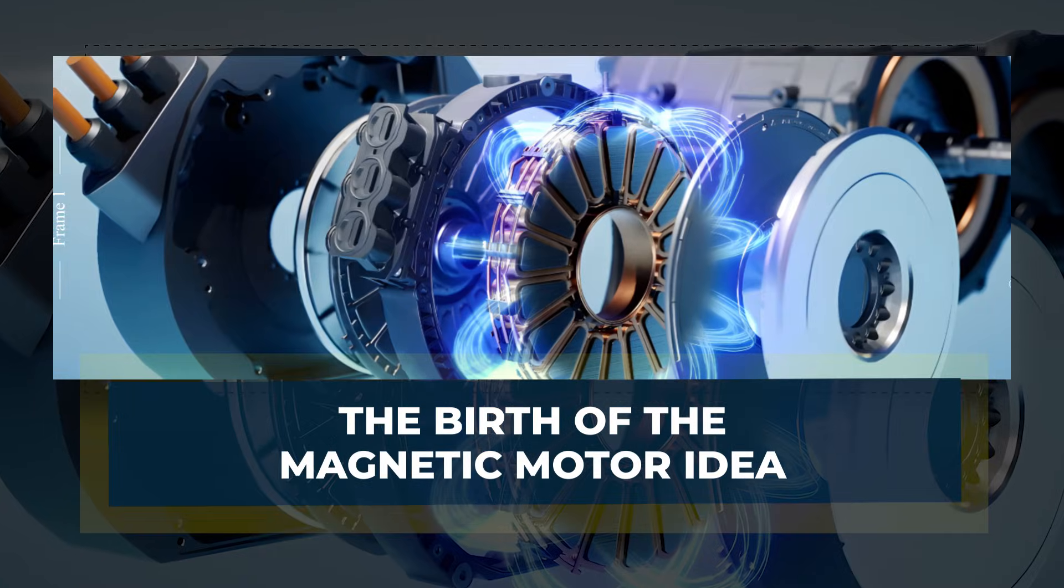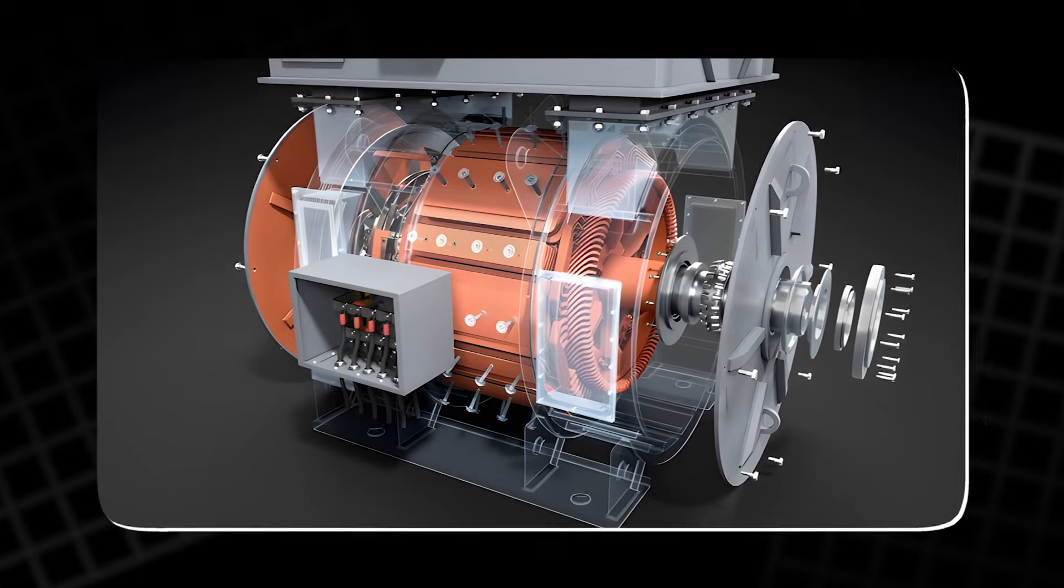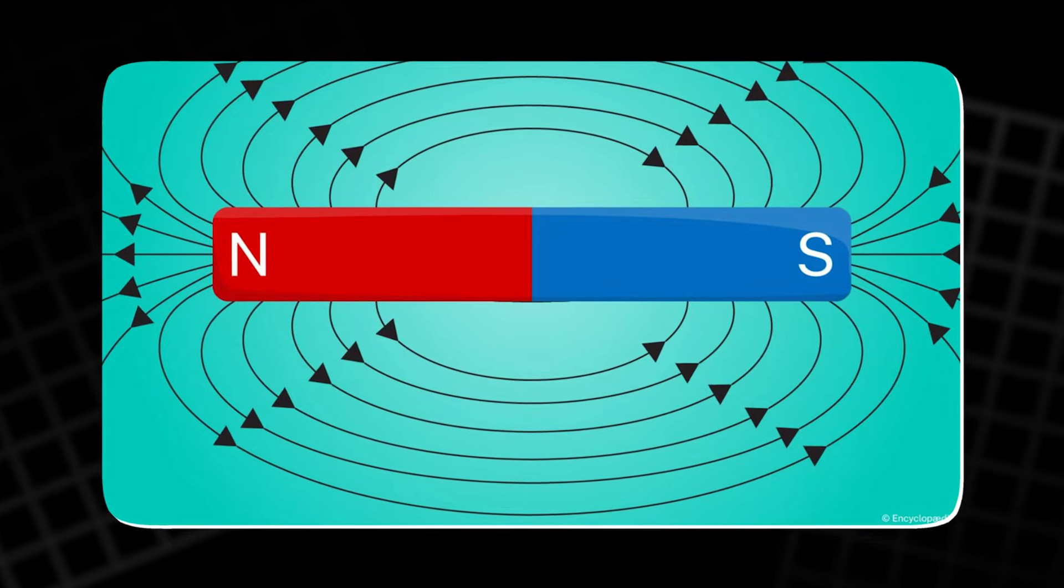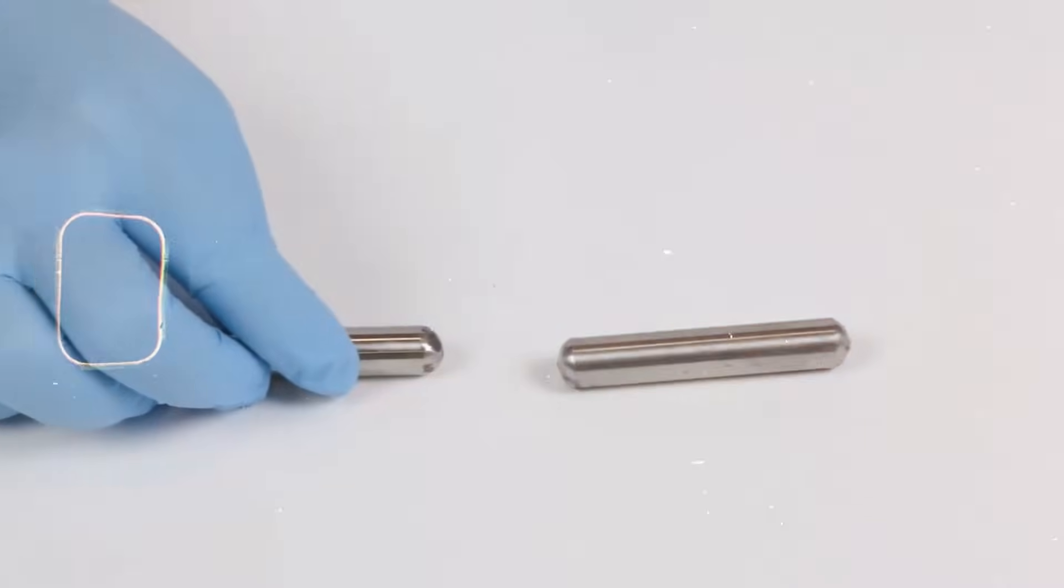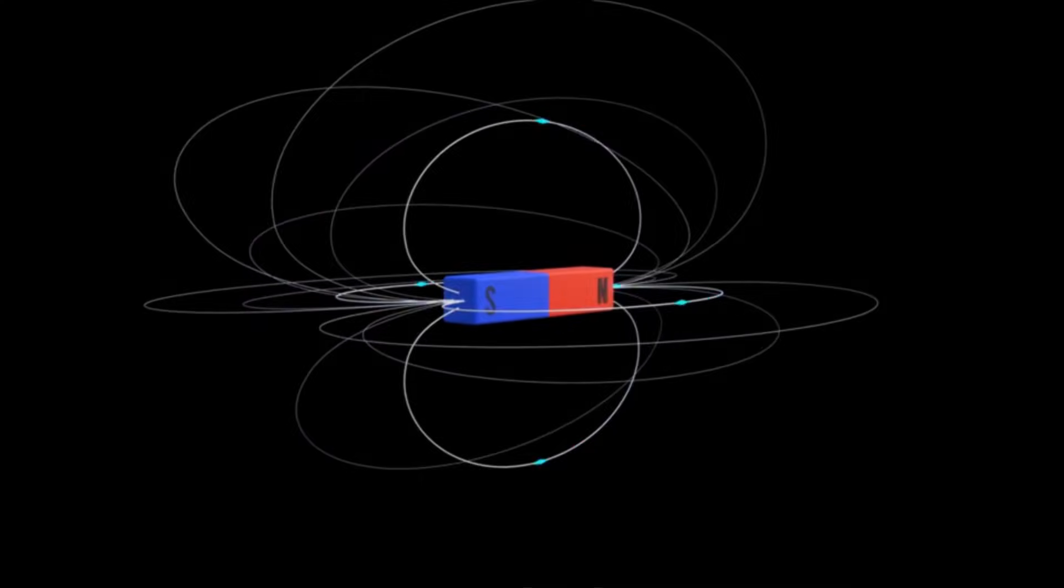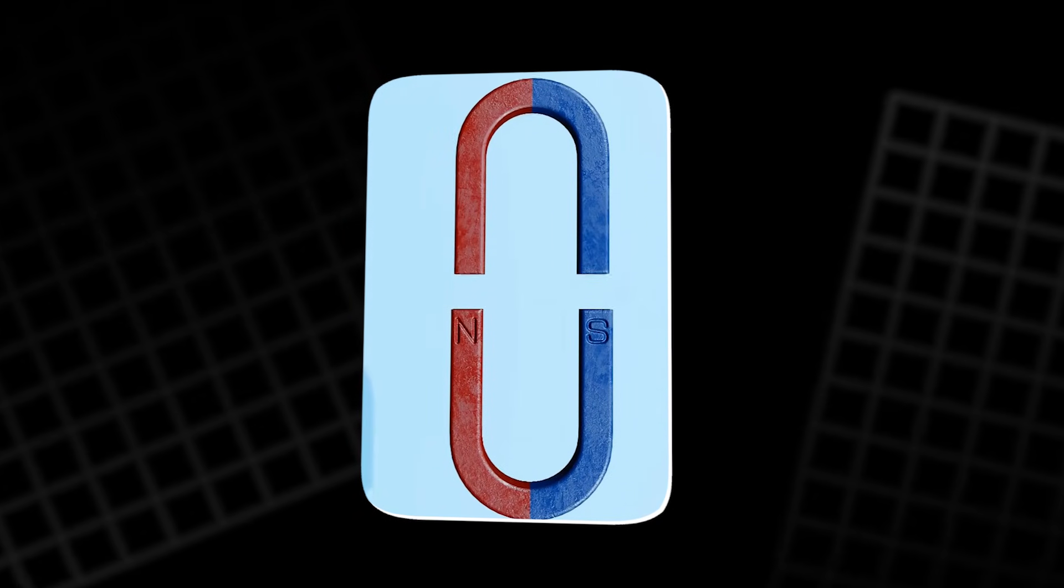The birth of the magnetic motor idea. The magnetic motor starts with something very simple: magnets have real force. You can feel that force in your hand when two magnets snap together or push apart. It feels strong and effortless. This makes people think magnets can provide unlimited work. One of the most common demonstrations uses magnets placed in a V-shape.